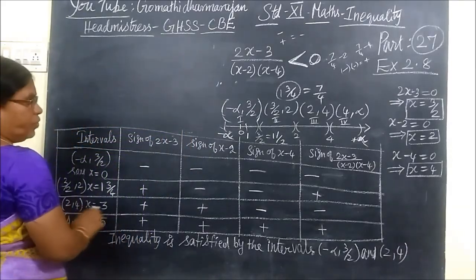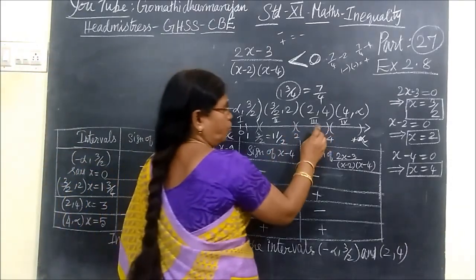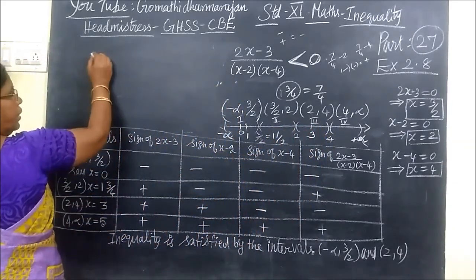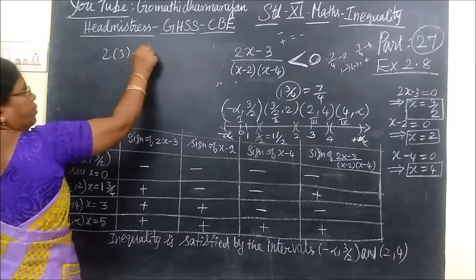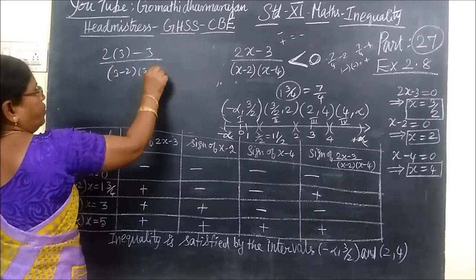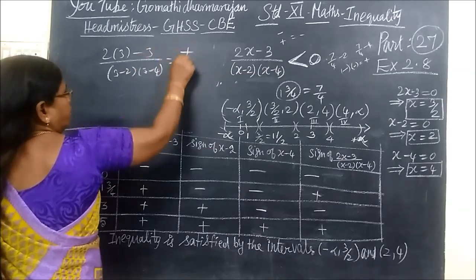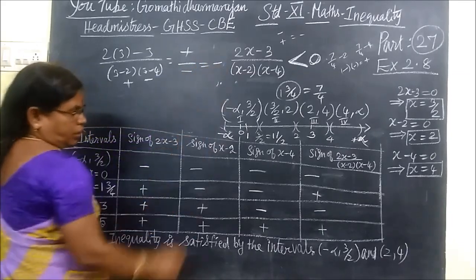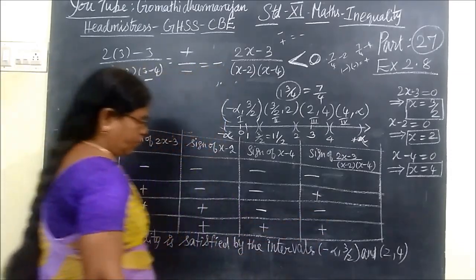Next, what is the interval? 2 to 4. I am taking 3. When you take 3, 2 bracket 3 minus 3, then 3 minus 2, 3 minus 4. This is plus, here is minus 1, here plus is minus. So minus. Totally minus.